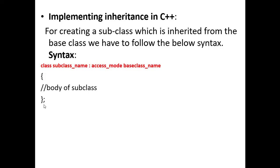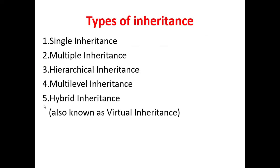Now let us see the different types of inheritance supported by C++. The first is single inheritance, second is multiple, third is hierarchical, fourth is multi-level, and fifth is hybrid inheritance. Some may also refer to hybrid as virtual inheritance.